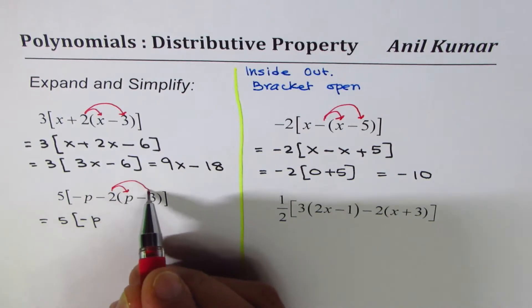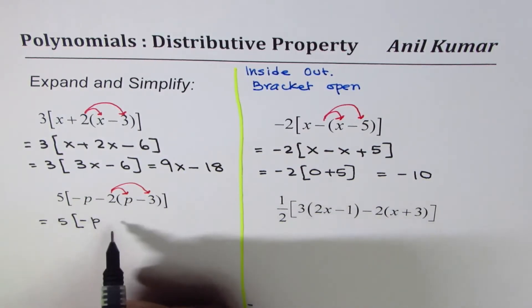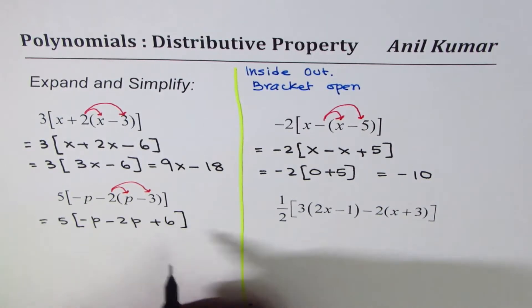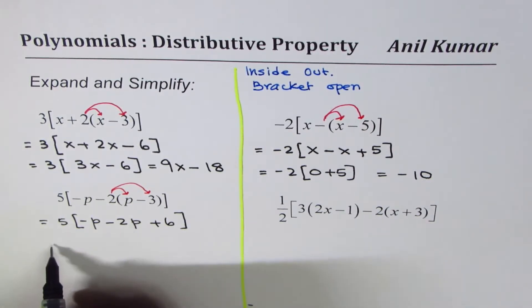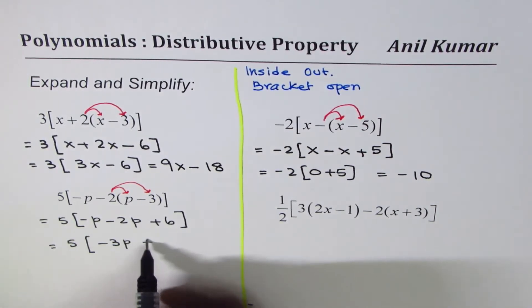Multiply each term inside the bracket by minus 2. Minus 2 times p is minus 2p. Minus 2 times minus 3 is plus 6. Simplify inside bracket: 5 times minus p minus 2p is minus 3p plus 6. And now open the bracket: minus 15p plus 30 is your solution.